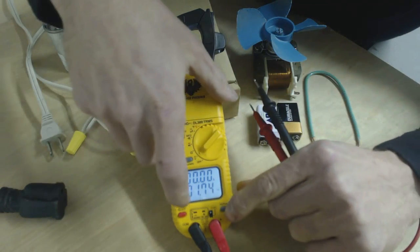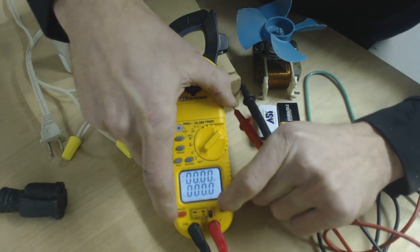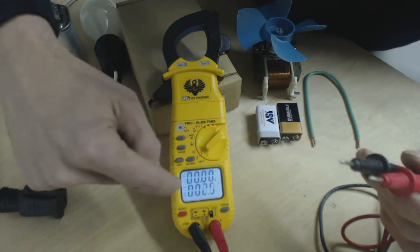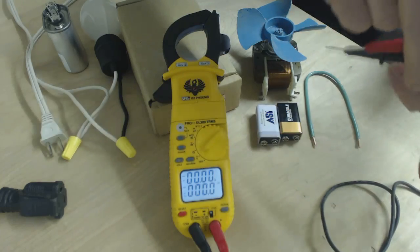We're going to go ahead and press the hertz button again to get back to where we were, and now we're going to press the select button and that's going to change it to a straight line here, and that indicates DC voltage.